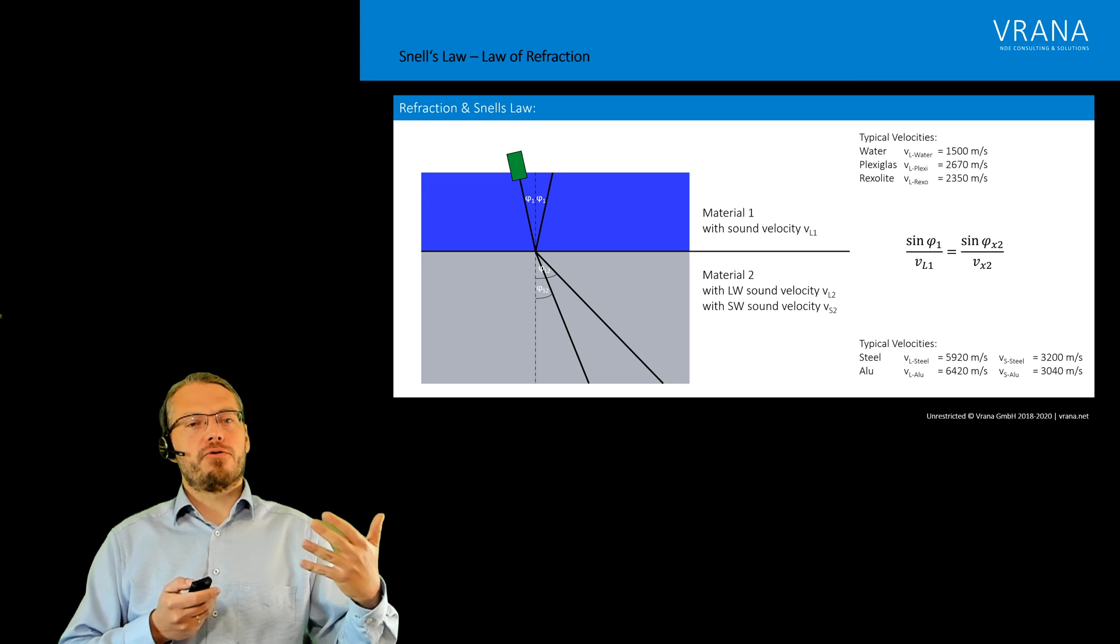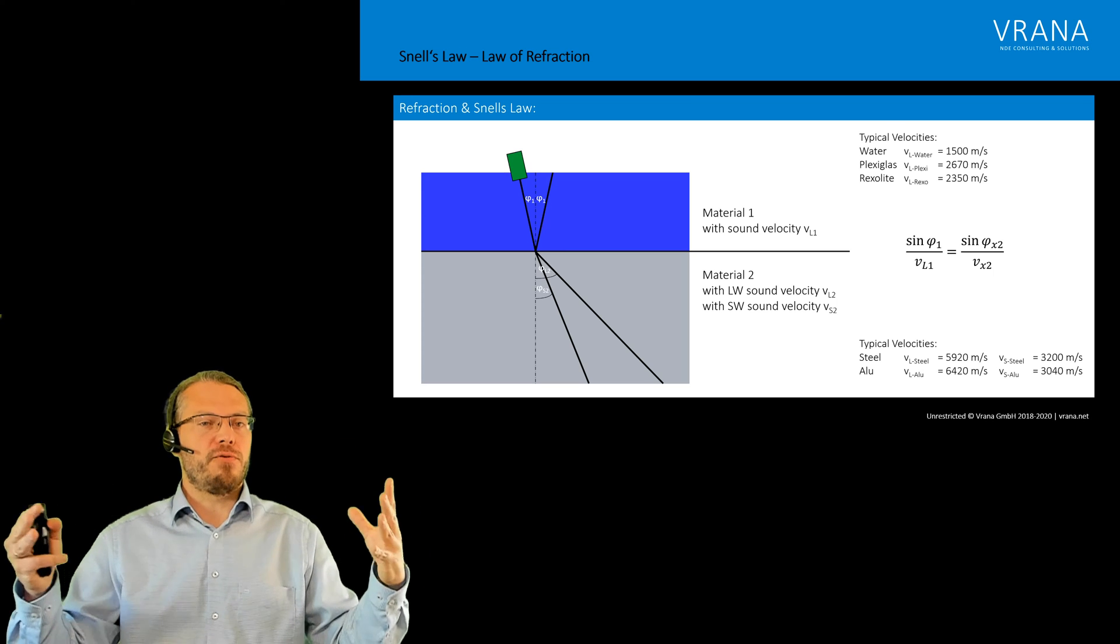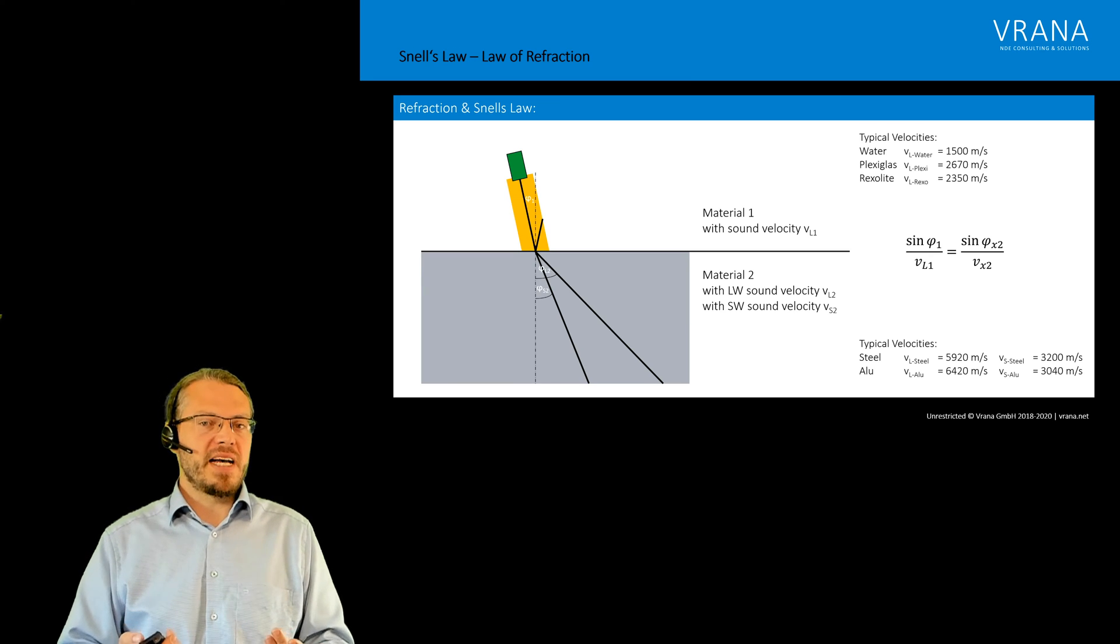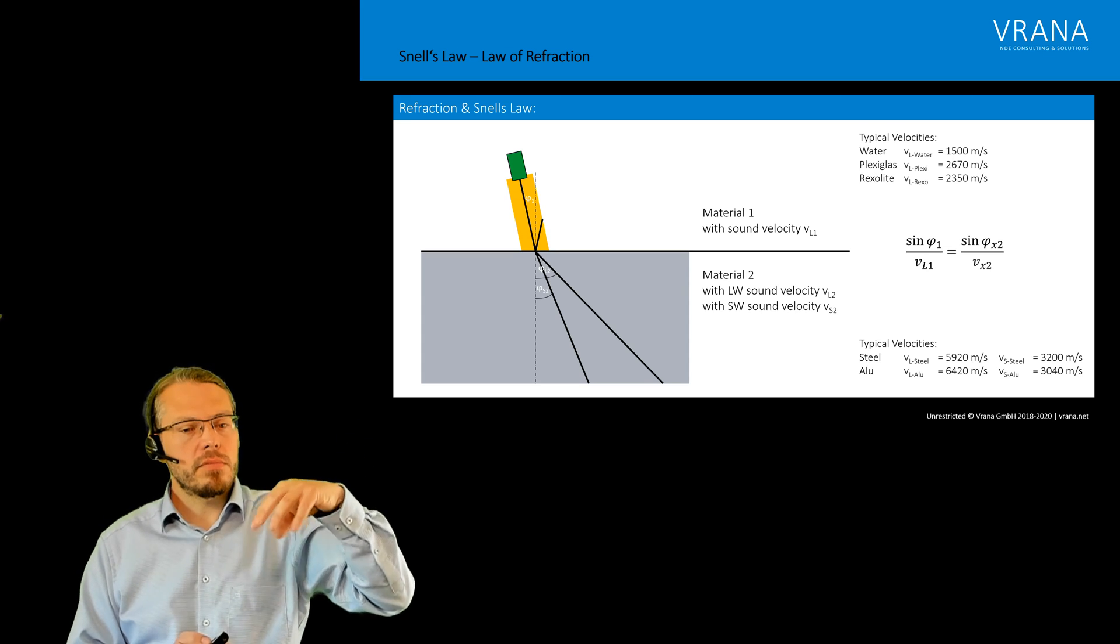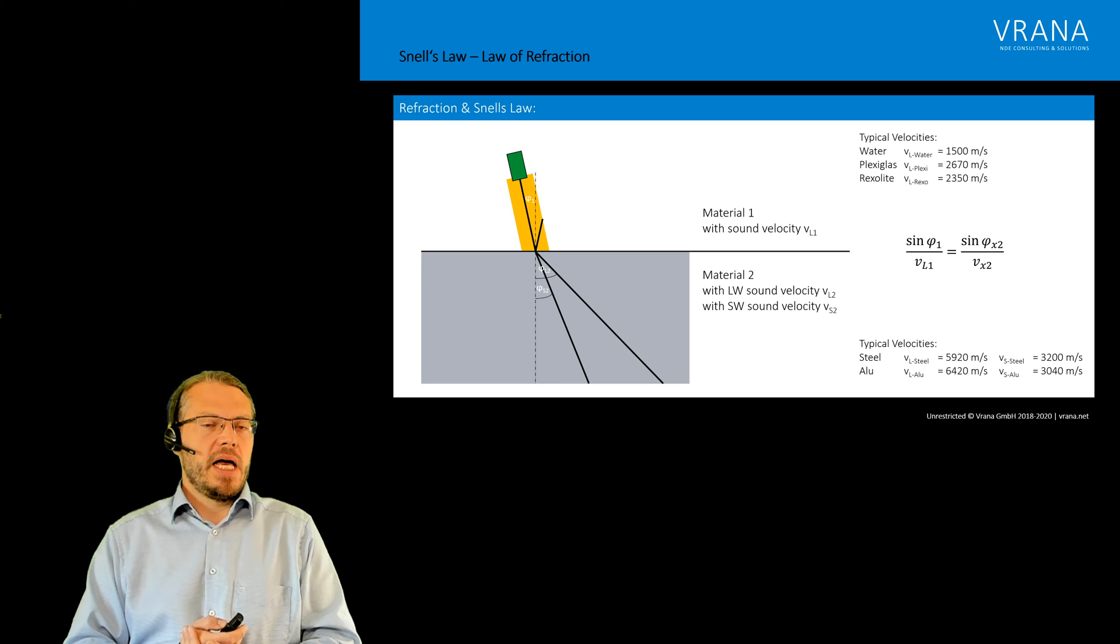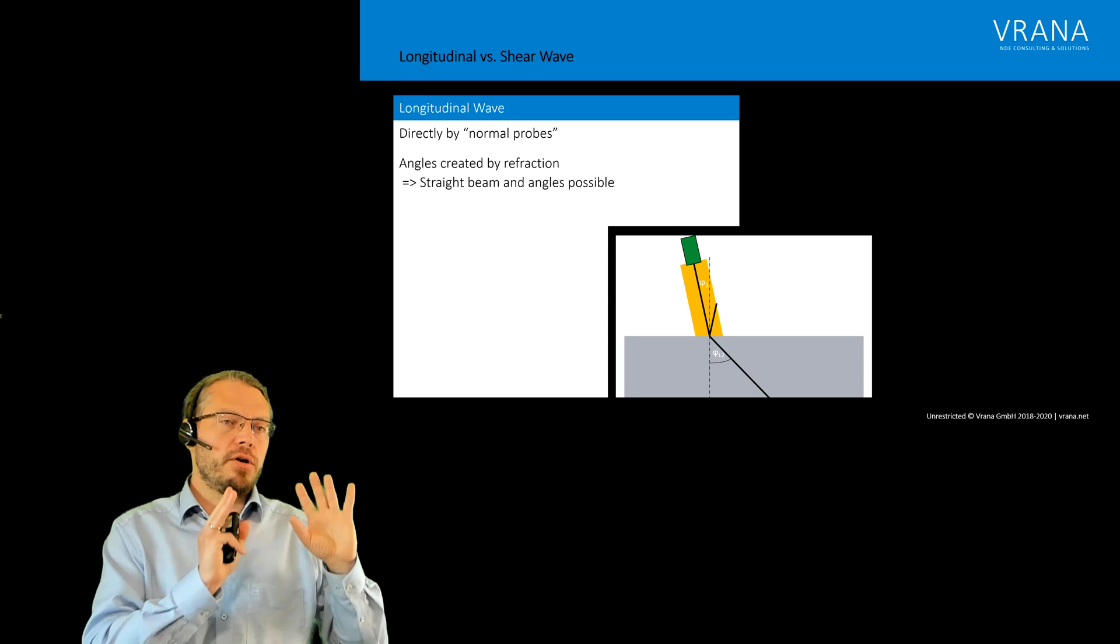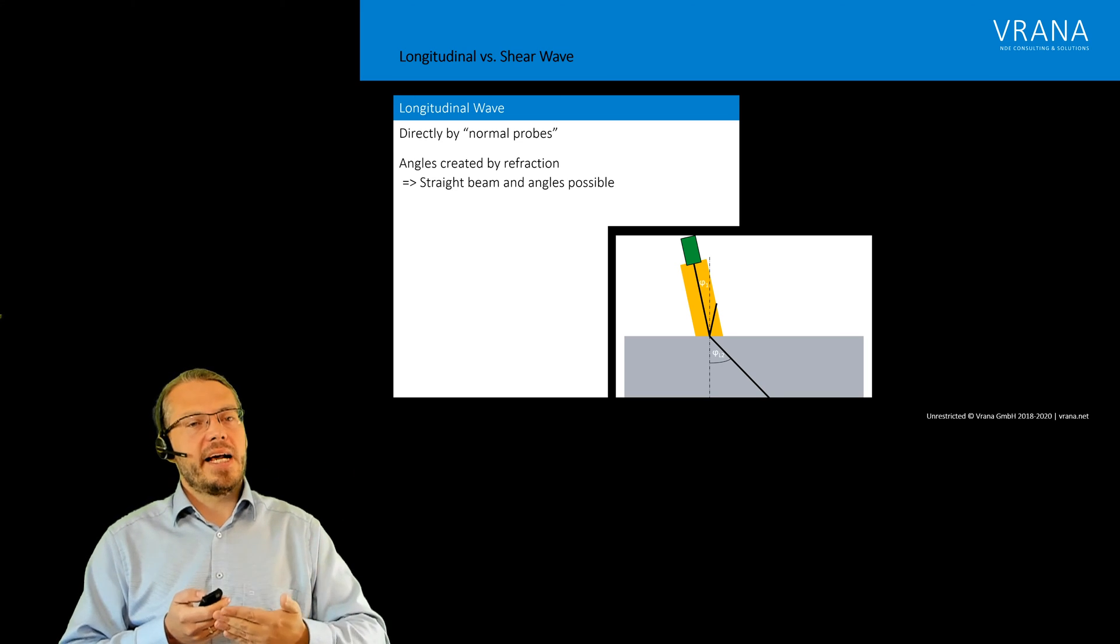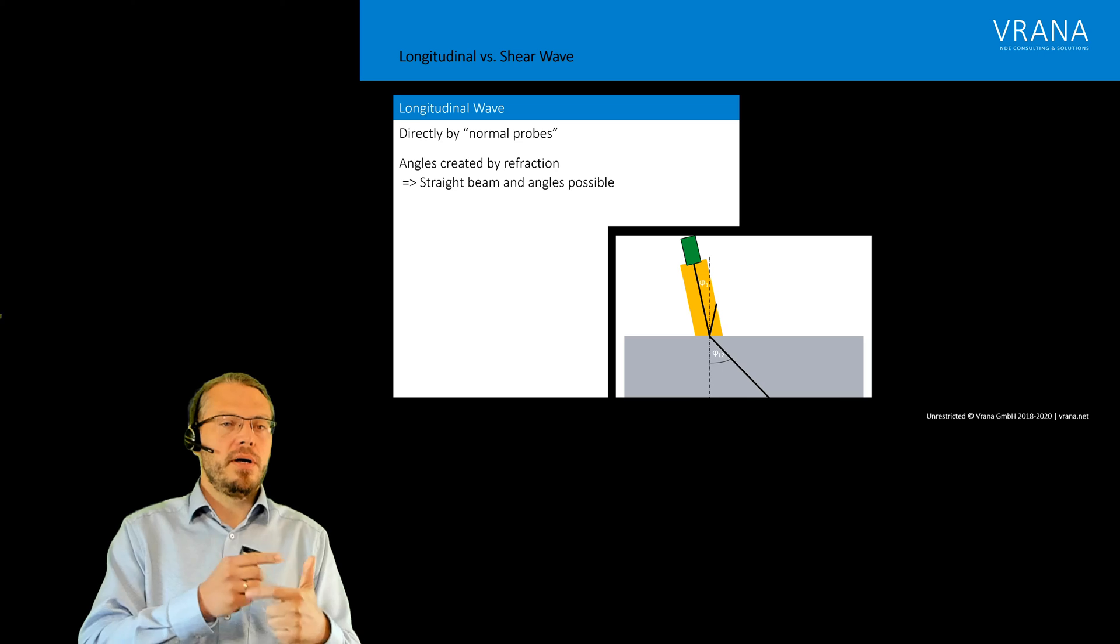Now instead of water, we already said we can use plexiglass. We do not have to sink our component into a bath of water. We can also use a wedge like this one here, made out of plexiglass, made out of rexolite, made out of whatever. And then we can use this with direct coupling. And doing this we can actually see that now we have what we talked about: longitudinal waves directly produced by our transducer, and angles are created by refraction. So we can use longitudinal wave probes, number one for straight beam and number two for angles.